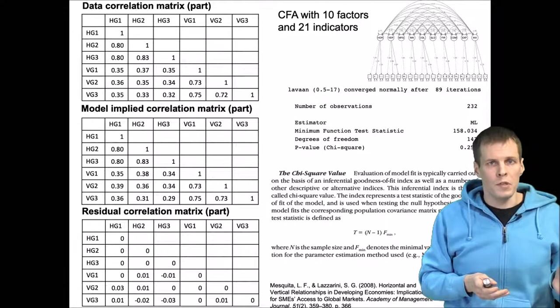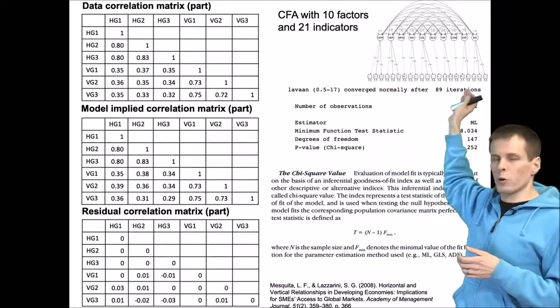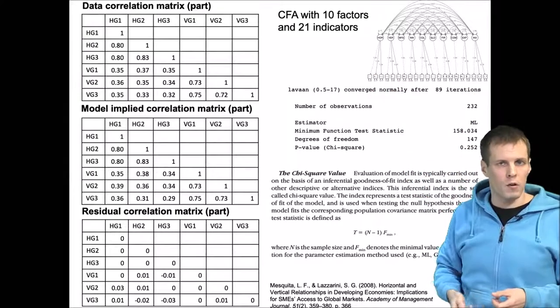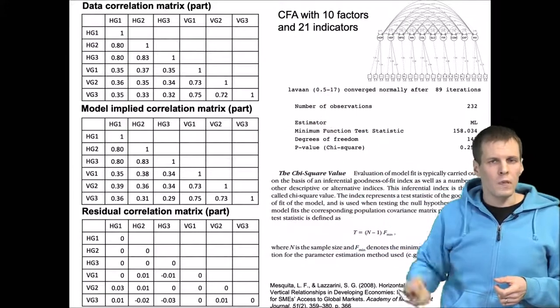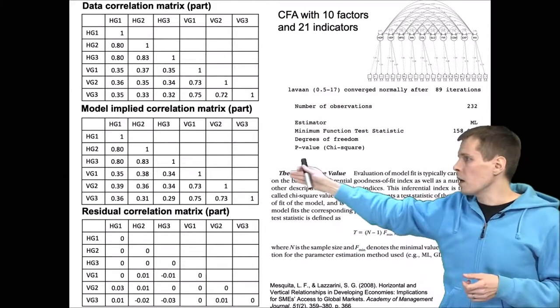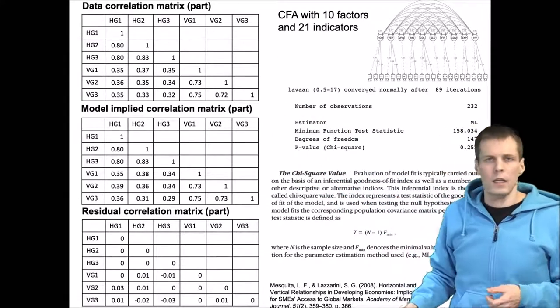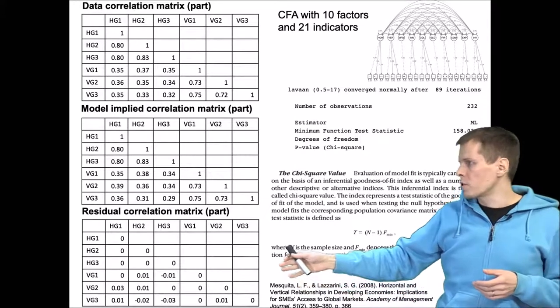I'm using a subset of their indicators here to estimate this big confirmatory factor analysis with 10 factors and 21 indicators. As we can see, the implied correlations are pretty close to the data correlations, and indeed the residual correlations are very small in the range of 0.02, 0.01 and thereabout.